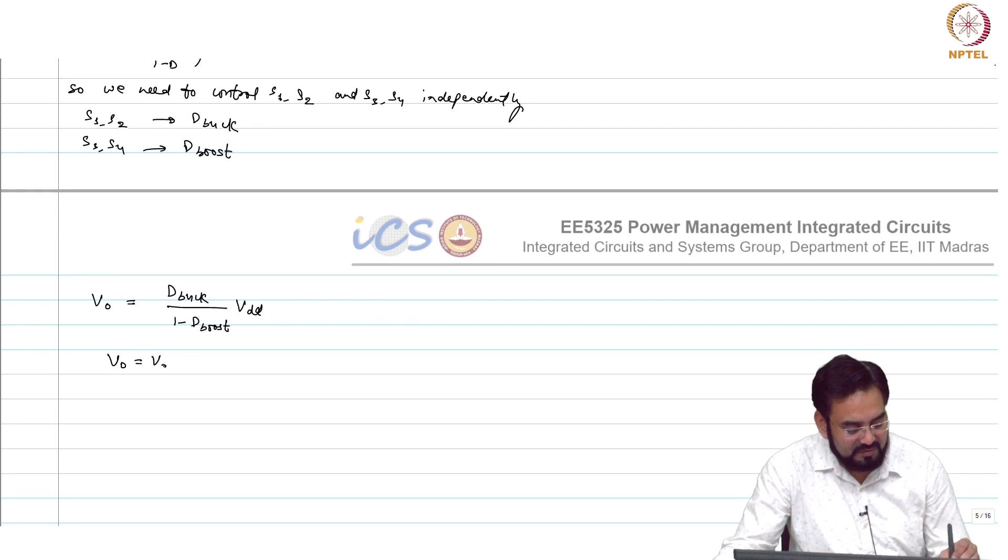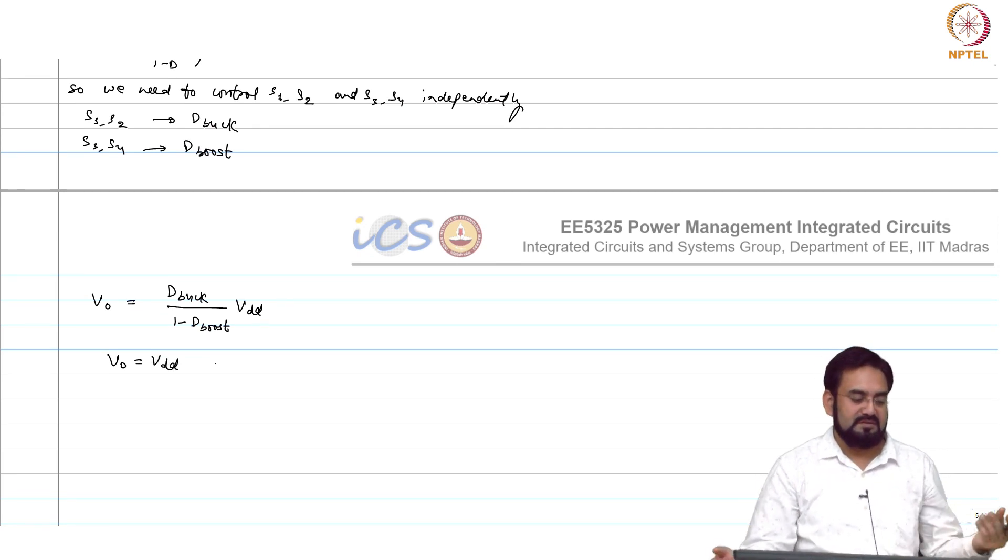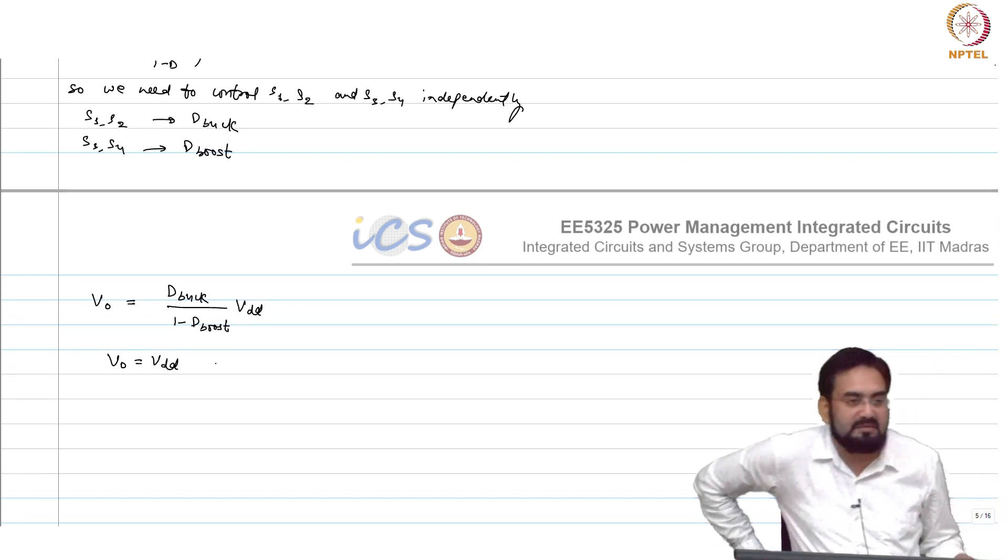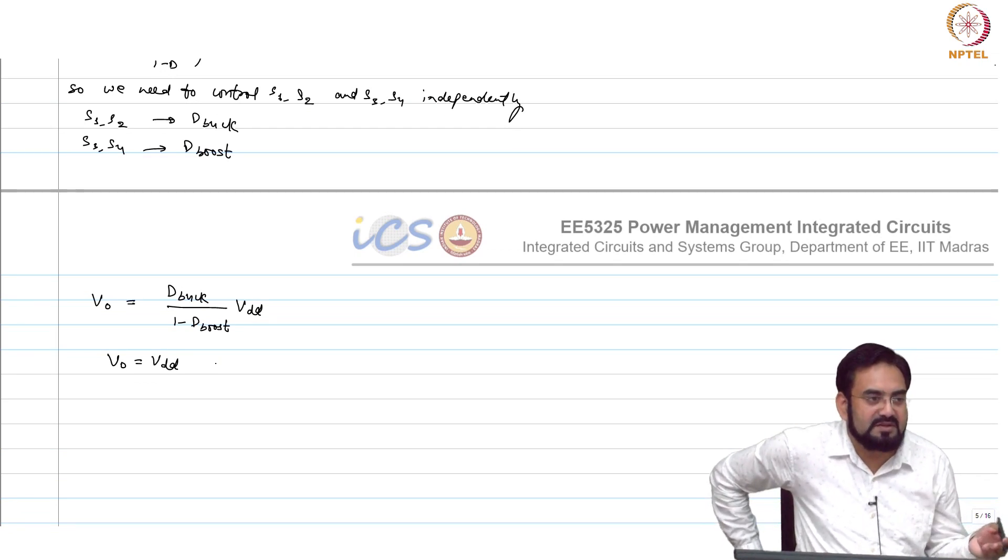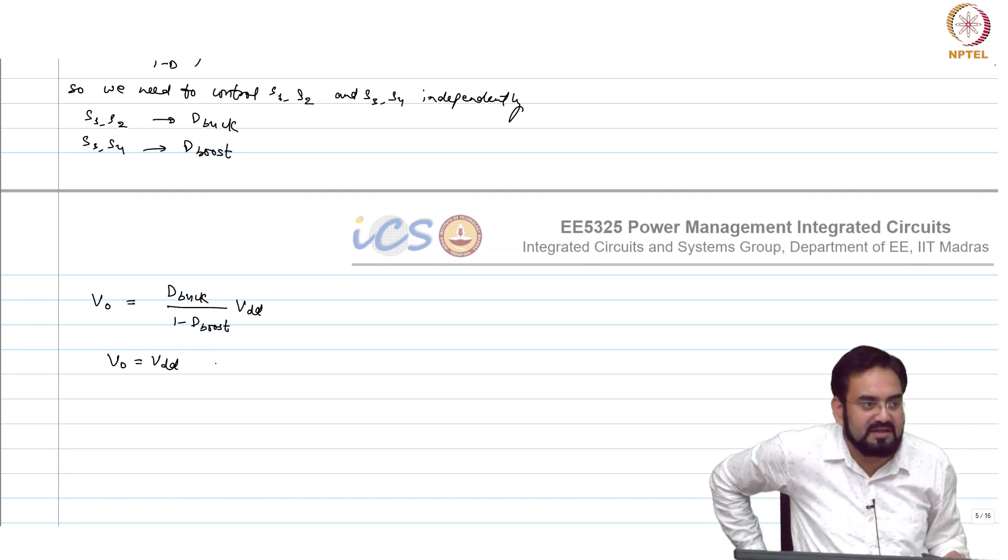If I want V out equal to V dd, what will be the debug and dboost? You can have infinite combinations, correct? 0.5 you can make both, then again you will end up having the same thing as you had earlier.